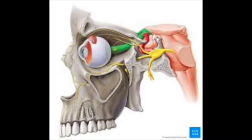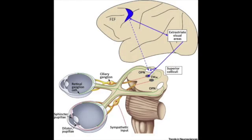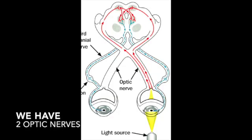The optic nerves come together in the brain and cross at an area called the midbrain. At the midbrain, nerve fibers cross from the right side and the left side and intermix at the Edinger-Westphal nucleus.